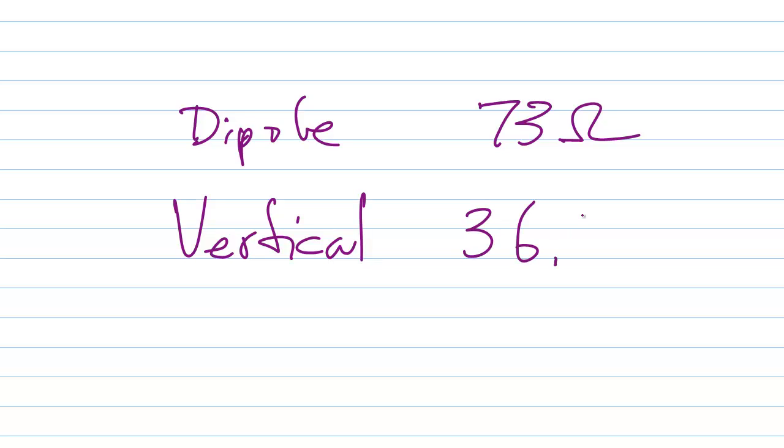And when you multiply 73 times 36.5, let's just make that a times sign so we don't get it confused with the decimal point, and then take the square root.